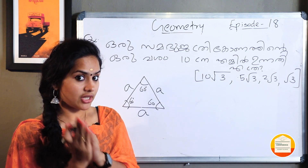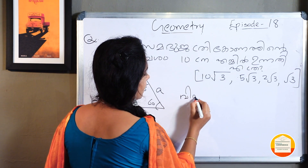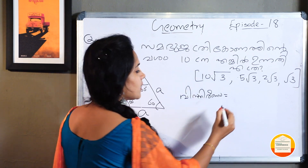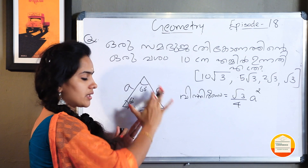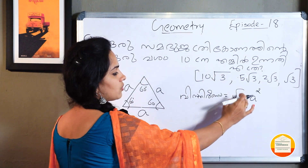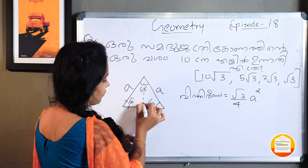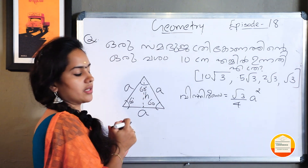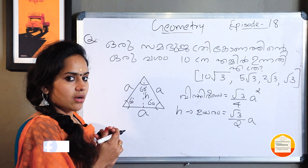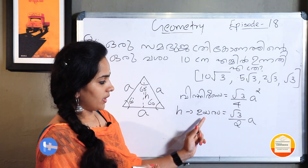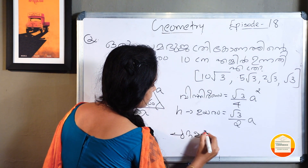In samabuja trigonath we can learn 3 equations. The first case is Vistirna (area). The area formula is root 3 by 4 a square. Because in samabuja trigonath all sides are equal to A. The height formula is also a simple thing — we can learn A, and A plus A plus A is 3A. Let's learn these 3 equations.